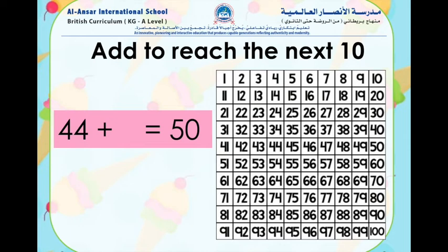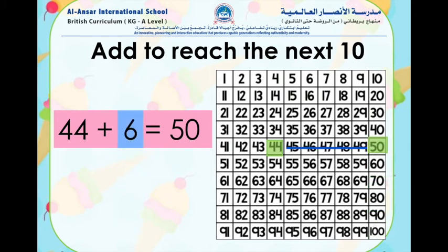Let's try it with the number 44. 44 plus what number equals 50? We find the number 44 on the number chart and count to reach 50. 44 plus 6 equals 50.